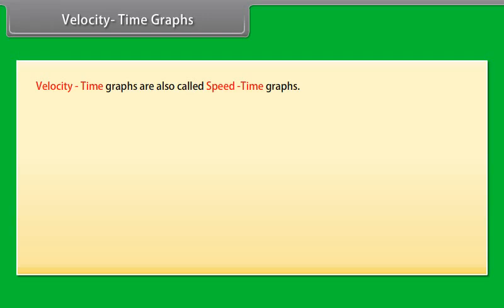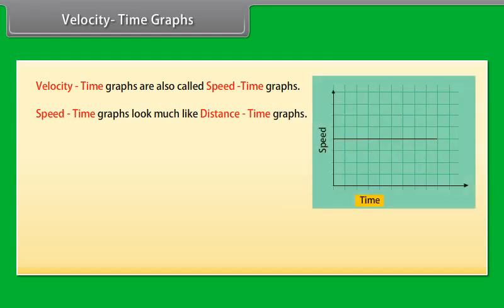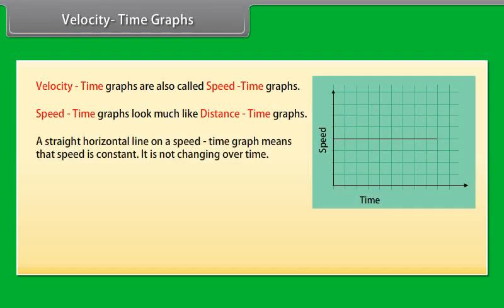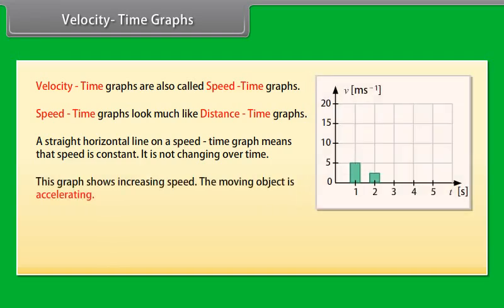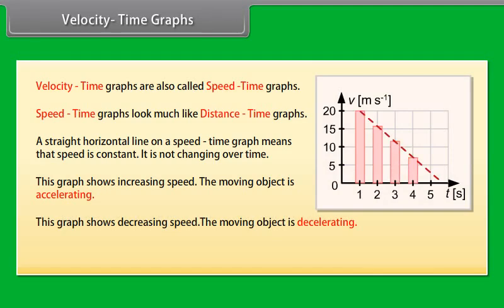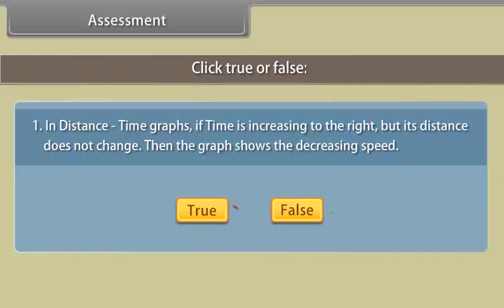Velocity-time graphs are also called speed-time graphs and look much like distance-time graphs. Time is plotted on the x-axis; speed or velocity is plotted on the y-axis. A straight horizontal line means speed is constant and not changing over time. An increasing line means the object is accelerating. A decreasing line means the object is decelerating. A curve represents non-uniformly accelerated motion.